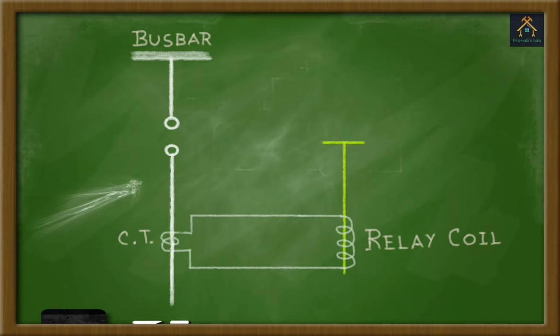In between the relay coil, a soft iron plunger is placed which is electrically isolated from the coil. Electrically isolated means no current will flow between the relay coil and that iron plunger. Now, when the relay coil is energized, that means magnetized, then the iron plunger will be attracted. And when the relay coil will be de-energized, that means de-magnetized, then the iron plunger will be released.